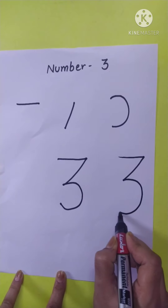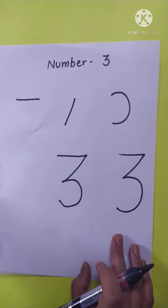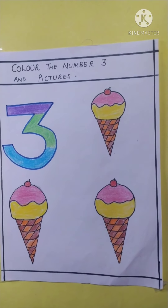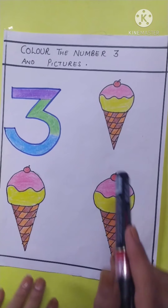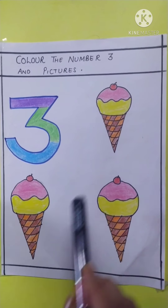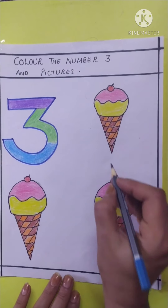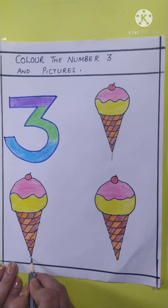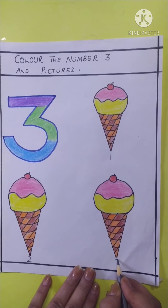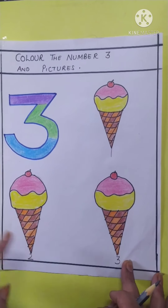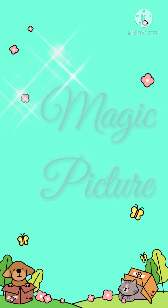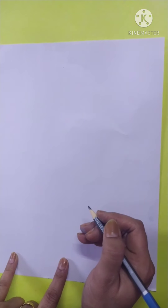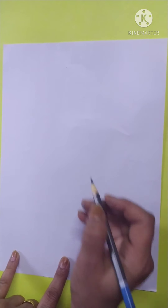This is number three. Now let us see once again — sleeping line, slant line, then curve. This is number three. Now look here — these are ice creams. Count with ma'am: one, two, three. One, two, three.